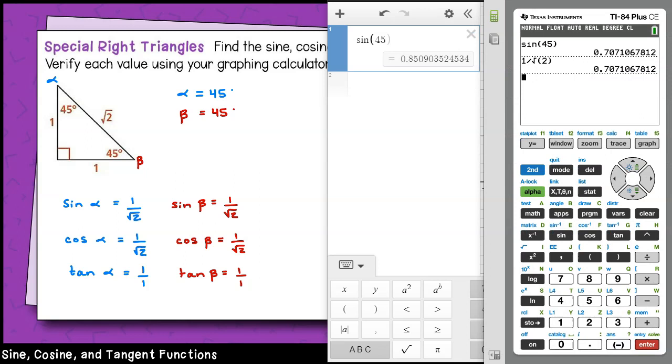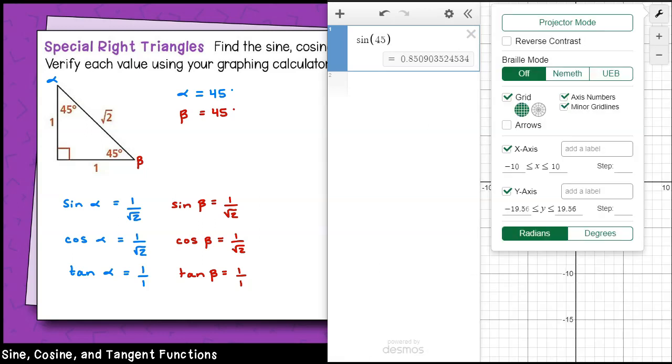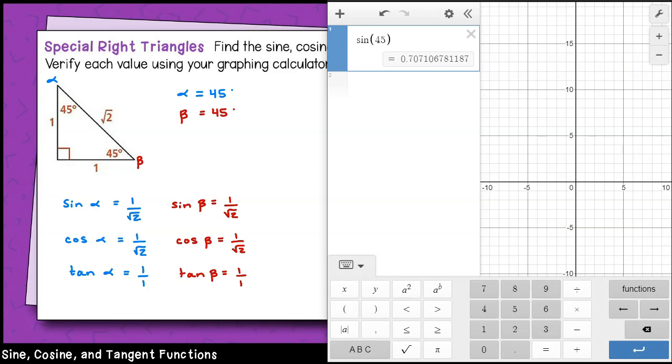Now, notice this answer does not match what we just found using the TI calculator. That's because Desmos is set to radians by default. Tap the wrench and then go to the bottom of the settings menu and tap degrees to change the calculator's mode to degrees. You do not need to retype your entry because the answer will automatically be recalculated in degrees.